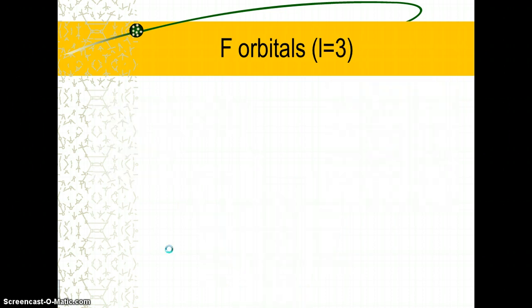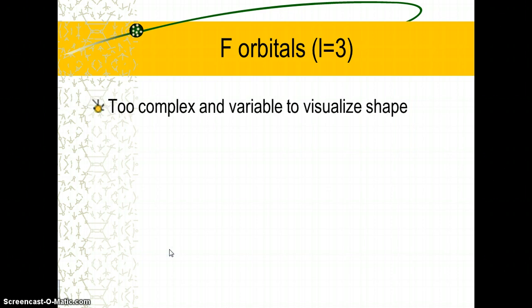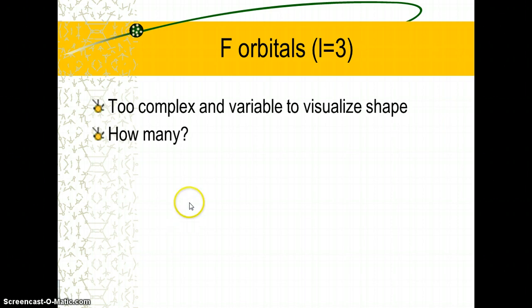The last type of orbital is called an f-orbital. It's a really complex shape, highly variable, so we won't worry about its shape. The only thing you need to know is how many there are on an energy level. We had one s, three p, five d — so for f-orbitals, you'll always find seven on any given energy level.